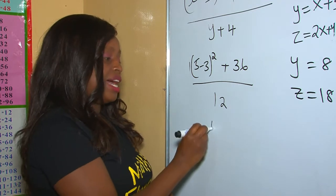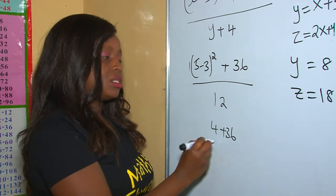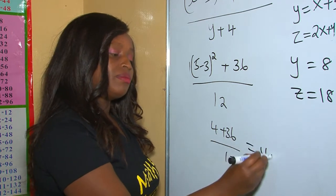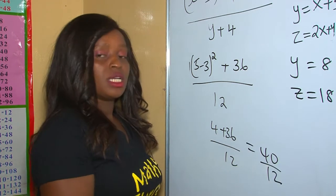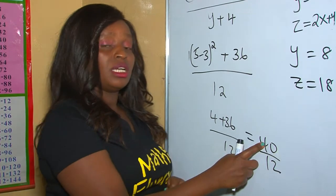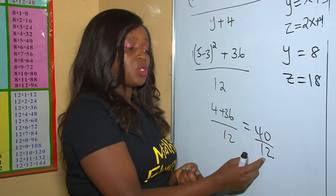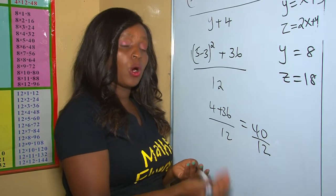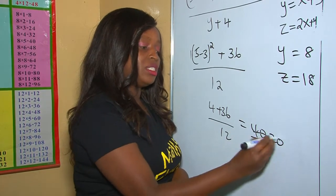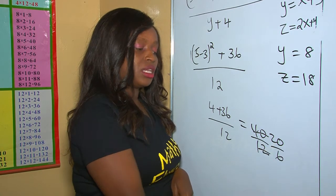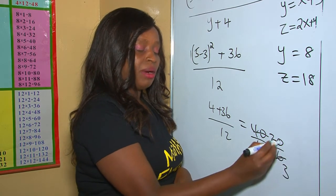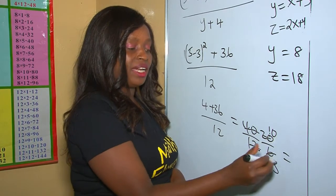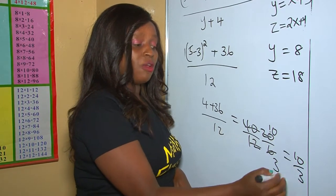Therefore we have 4 plus 36, all over 12. So 4 plus 36 is 40, divided by 12. Since 40 and 12 are both even numbers, they share a common divisor of 2. Simplifying: 40 divided by 2 is 20, 12 divided by 2 is 6; then 20 divided by 2 is 10, 6 divided by 2 is 3.